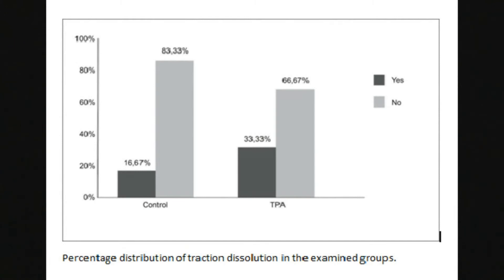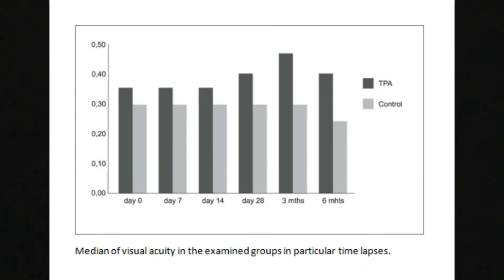The results were very favourable, showing that in the TPA group the traction dissolved in 33% of cases, compared to the control group with only 16%. In addition, we also confirmed that within six months visual acuity improved slightly in patients treated with TPA, whereas the control group with no treatment suffered a deterioration in vision.